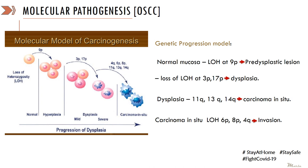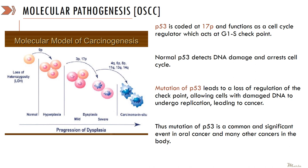This illustration and description is a must-know topic for all students. To summarize: the p53 protein is coded at the short arm of chromosome 17 and functions as a regulator of the cell cycle. Any genetic defect at the short arm of chromosome 17 results in dysregulation of the p53 protein. The normal p53 protein detects damage and arrests the cell cycle. Mutation of p53 leads to loss of this checkpoint regulation, allowing cells with damaged DNA to undergo replication and leading to the development of cancer. Thus mutation of p53 is a common and significant event in oral cancer and many other cancers in the body.